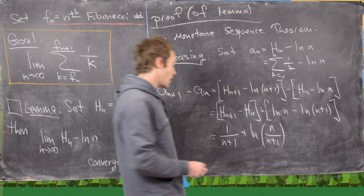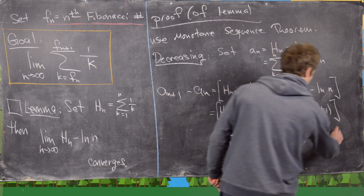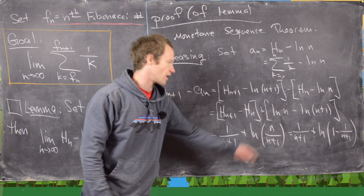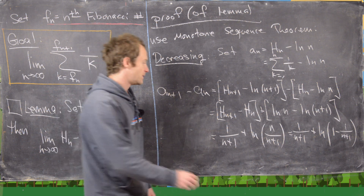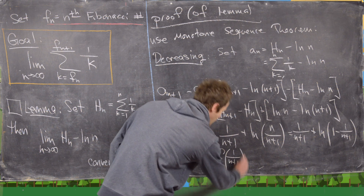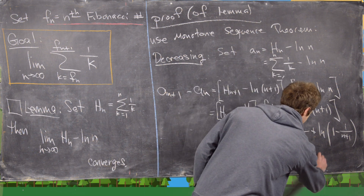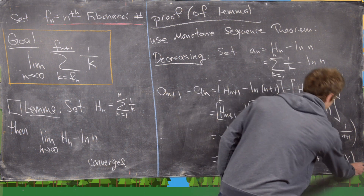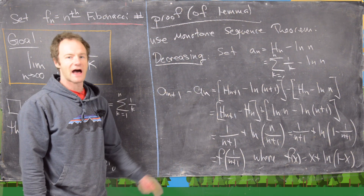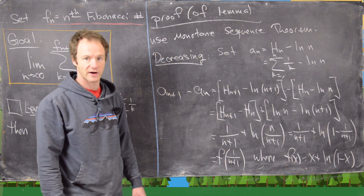We rewrite this as 1 over (n+1) plus the natural log of 1 minus 1 over (n+1), just by rewriting the argument of that natural log. This equals f(1/(n+1)), where f(x) equals x plus the natural log of 1 minus x. That's our nice setup to show the sequence is decreasing. I've run out of room, so I'll move this to the top of the board and continue.